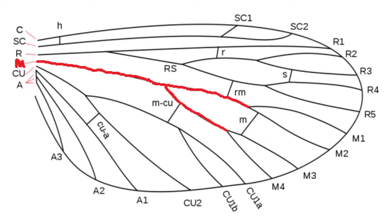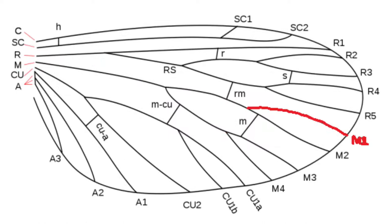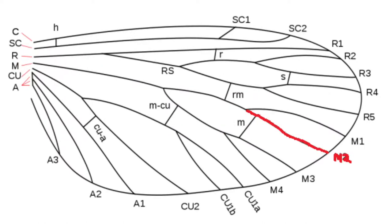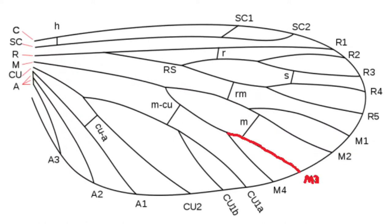Now we move down to the media, which like the radial sector splits in the middle. The media then splits into M1, M2, M3, and M4.